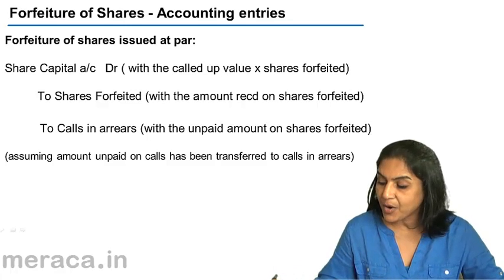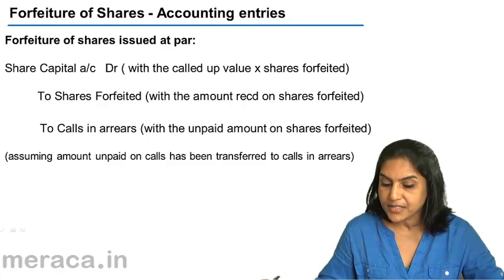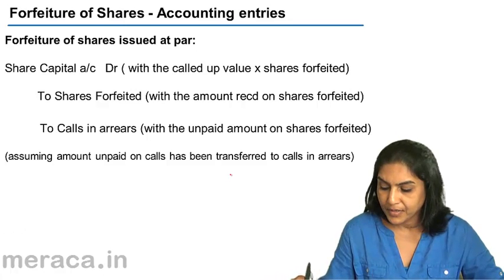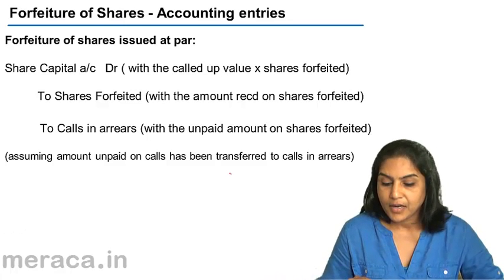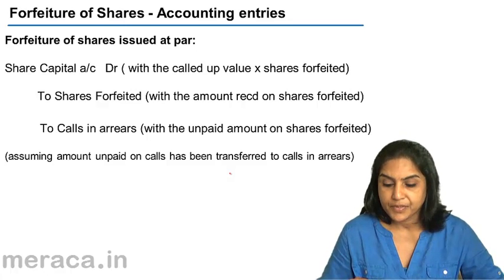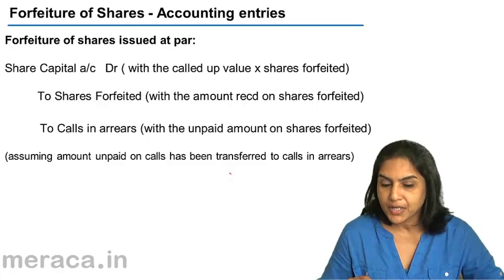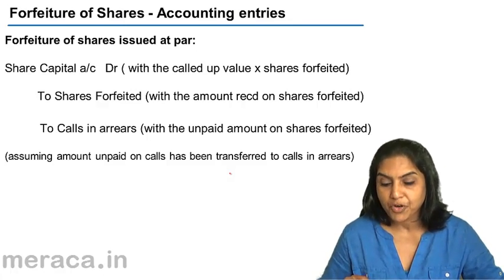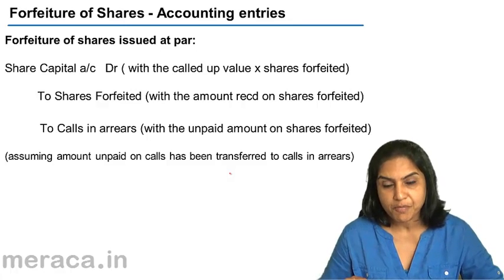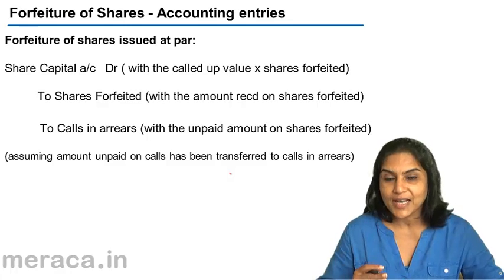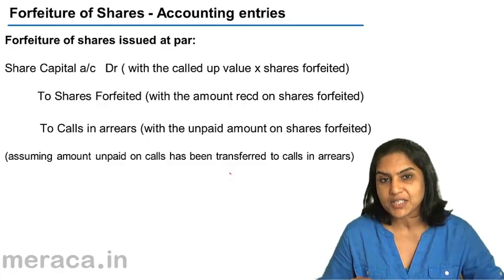Let us see the accounting entries with respect to forfeiture of shares. The entry could be slightly different when we talk of forfeiture of shares which were issued at par, forfeiture of shares which were issued at a premium, and forfeiture of shares which were issued at a discount. We will discuss each of these separately.